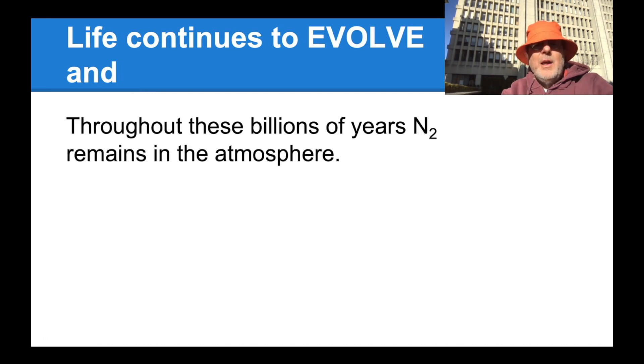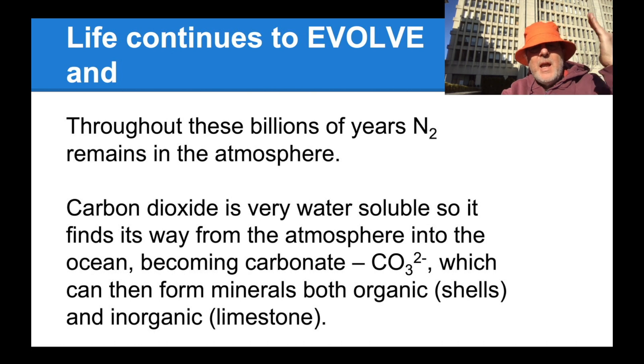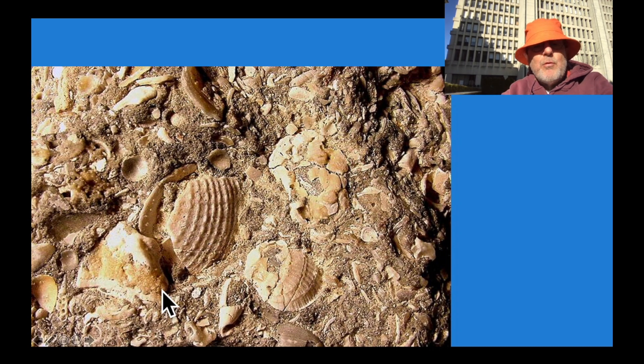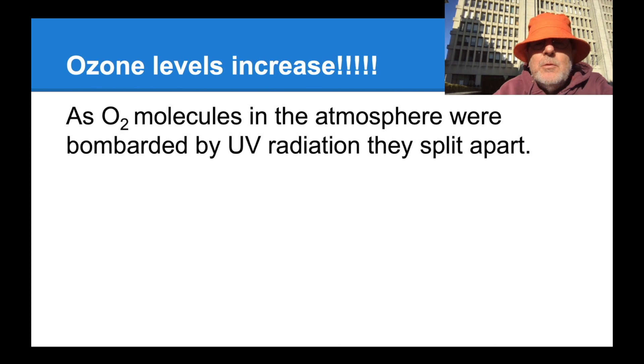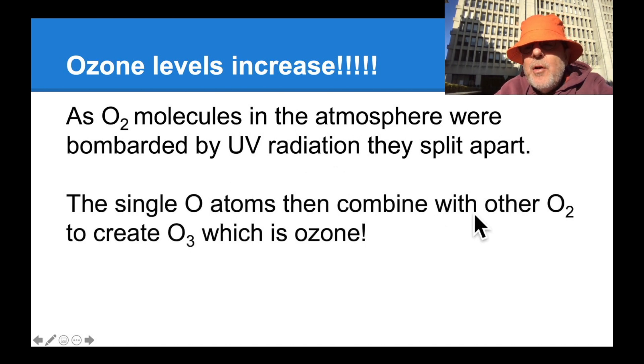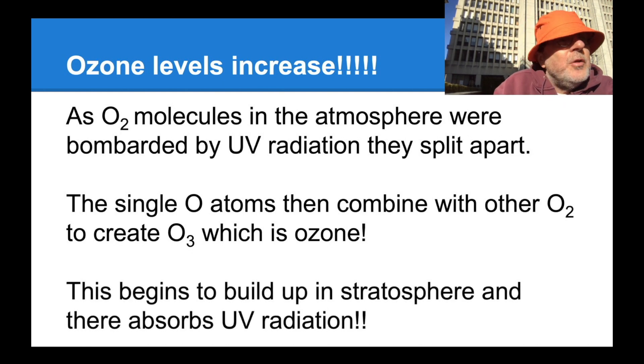Life continues to evolve. And throughout the billions of years, N2 remains in the atmosphere. Carbon dioxide is very water soluble, dissolves in water. Seltzer. So it finds its way from the atmosphere into the ocean becoming carbonate, which then can form minerals, both organic shells and inorganic limestone. And these we find in rocks suddenly, trapping carbon in the ground. And remarkably, suddenly, oxygen, which percolates out of the ocean into the atmosphere, undergoes a chemical reaction, which creates O3. O2 molecules in the atmosphere are bombarded by UV radiation. The single oxygen atoms then combine with another O2 and create ozone, which absorbs ultraviolet radiation, which would otherwise damage living creatures out of the water.